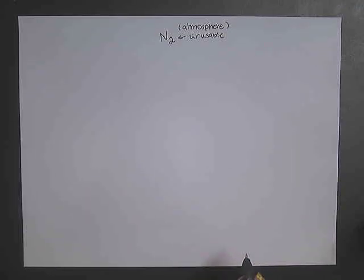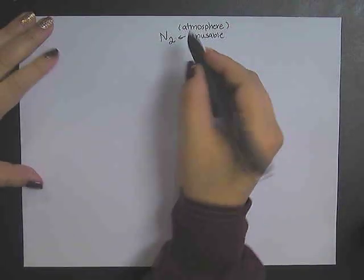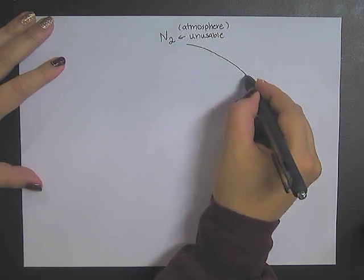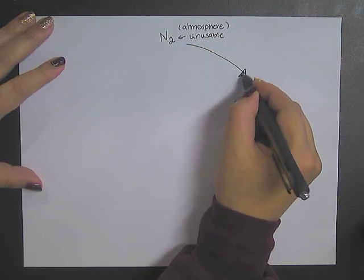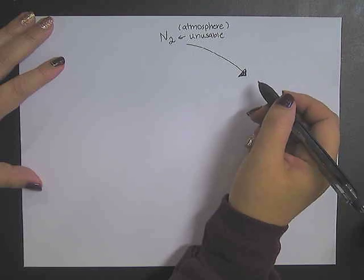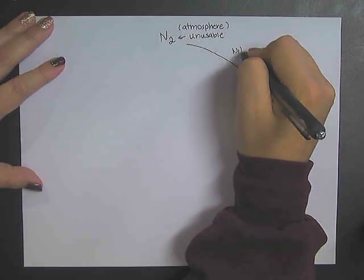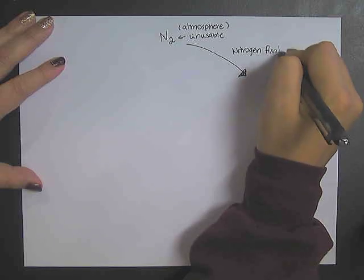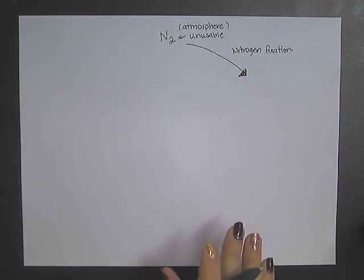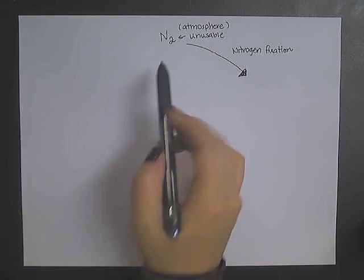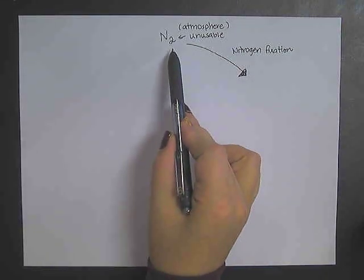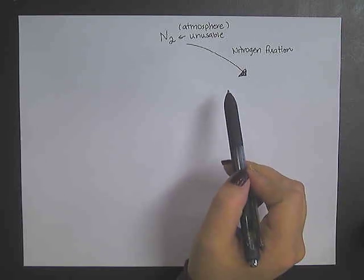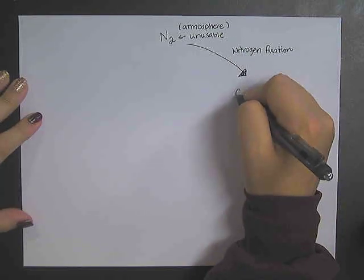There are two ways that this can happen. With the nitrogen, the process of taking it away from the atmosphere and no longer a gas is called nitrogen fixation. When that happens, we're going to convert the gas nitrogen to an organic form of nitrogen and convert it into ammonia.